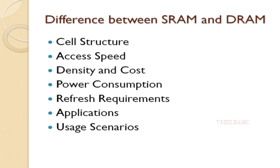Refresh requirement: SRAM cells do not require periodic refreshing as they can hold their data as long as power is applied. DRAM cells need periodic refreshing to counteract charge leakage from the capacitors; this refreshing process consumes memory access bandwidth. Applications: SRAM is often used for cache memory in processors and other applications that require fast and frequent memory access, such as high-performance computing and real-time systems.